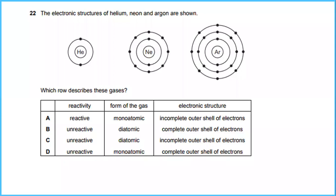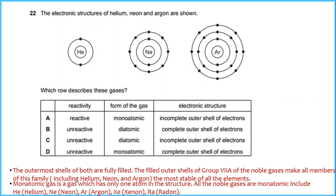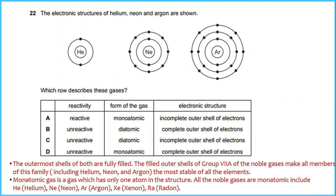Number 22, the electronic structure of helium, neon and argon are shown. Which row describes these gases? The outer shells of both are fully filled. The filled outer shells of Group 8A of the noble gases make all members of this family, including helium, neon and argon, the most stable of all elements. Monoatomic gas is a gas which has only one atom in the structure. All the noble gases are monoatomic and include helium, neon, argon, xenon and radon. So the answer for this will be in terms of reactivity: unreactive; form of the gas is monoatomic; and electronic structure will be complete outer shell of electrons. The answer will be D.